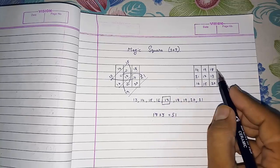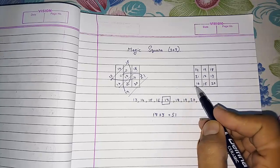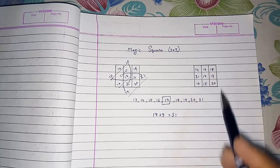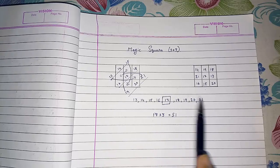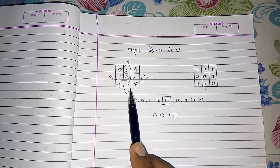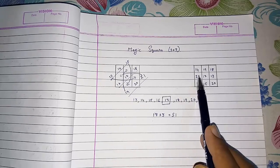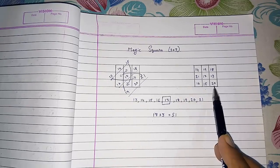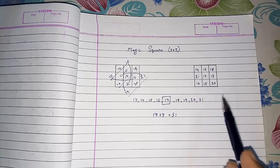Now you can add all these numbers. You will get 51 horizontally, vertically, and diagonally also. So this way we can solve any consecutive numbers. It can be odd consecutive or even consecutive. You have to follow the same method. You can add all these numbers horizontally, vertically, or diagonally, and you will get the same sum: 51.